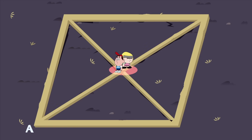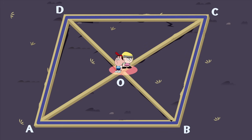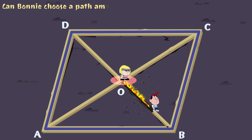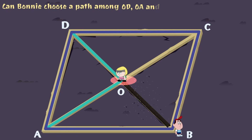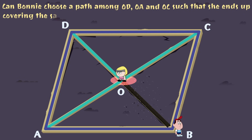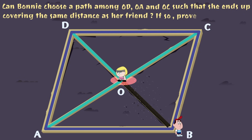If A, B, C, and D represent the four vertices of the parallelogram, and Clyde has already started to walk along path OB, can Bonnie choose a path among OD, OA, and OC such that she ends up covering the same distance as her friend? If so, prove how.